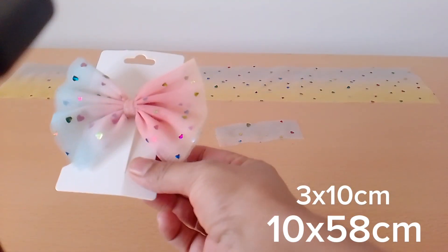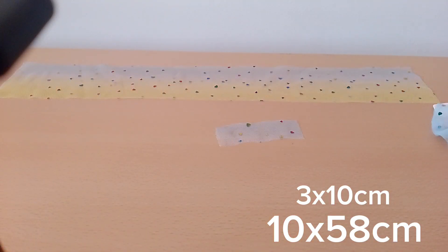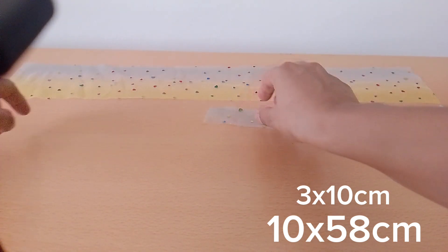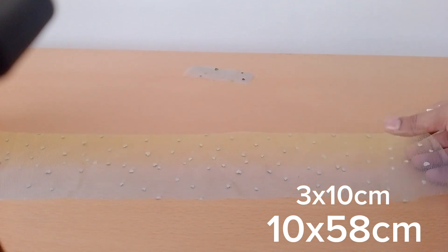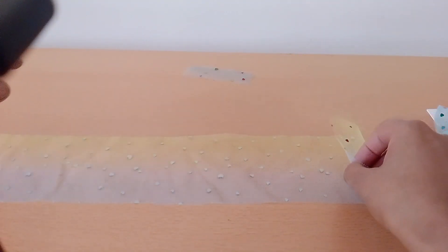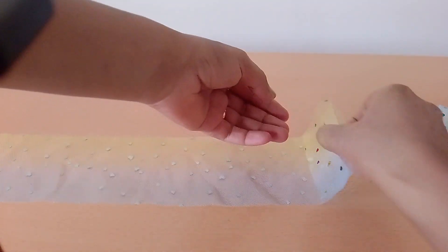In this video you will learn how to make this type of tulle bow. For this you need a 10 by 58 centimeter long strip and another small strip of 3 by 10 centimeter for tying the knot.